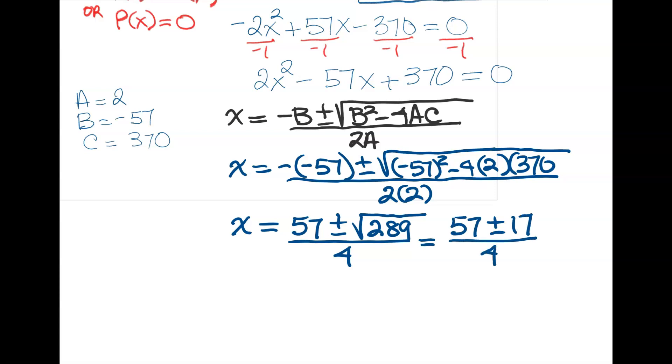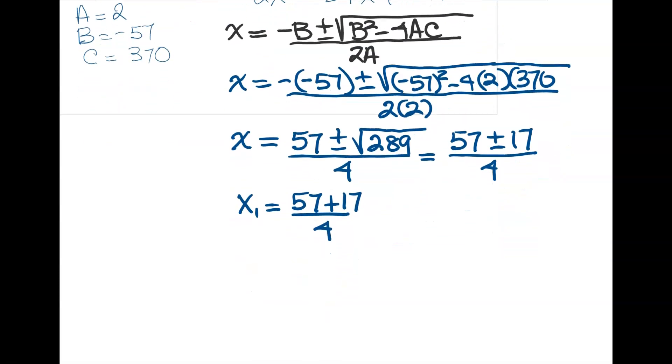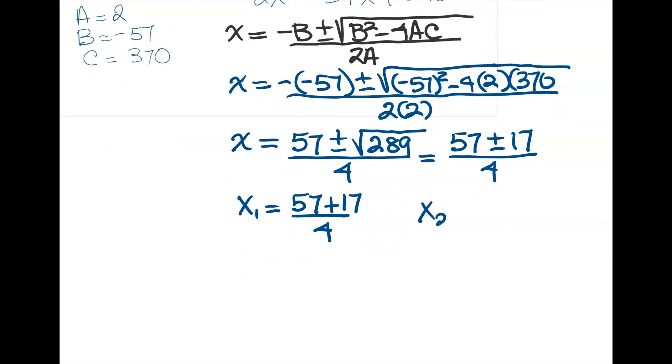That's going to lead me to two answers. One solution will be (57 + 17)/4, and the other solution will be (57 - 17)/4, and I think this is the one I'm going to want because it said find the smallest.